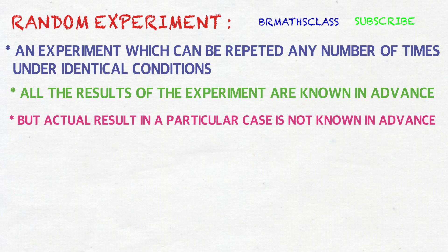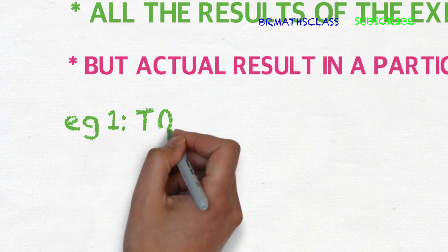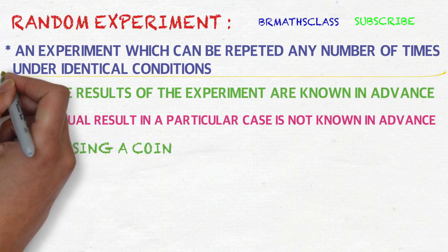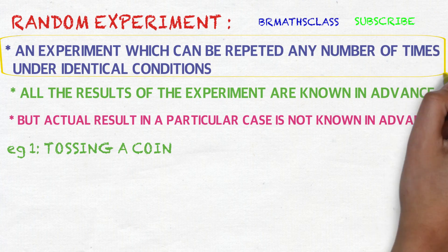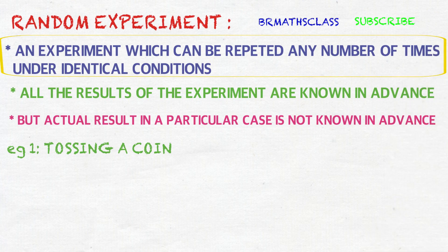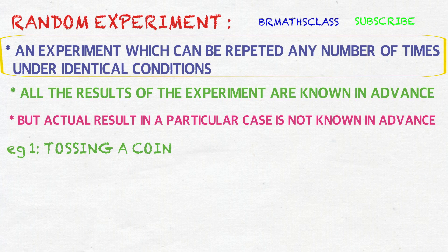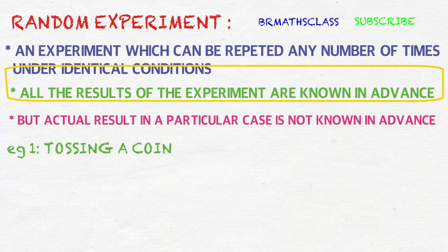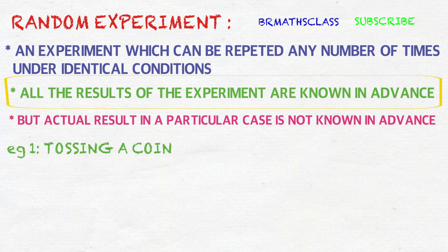We'll discuss these three conditions with an example: tossing a coin. Tossing a coin is a random experiment. First condition: it can be repeated any number of times under identical conditions — yes, we can toss a coin any number of times. Second condition: all the results are known in advance — when a coin is tossed, it results either head or tail, so all results are known in advance. Second condition also holds good.